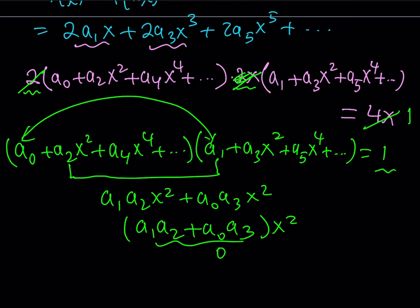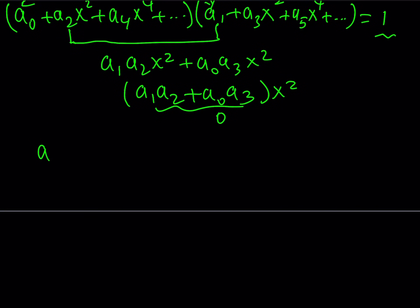From here, we're getting a0 times a1 equals 1, and everything else like a2, a3, a4 has to equal 0.